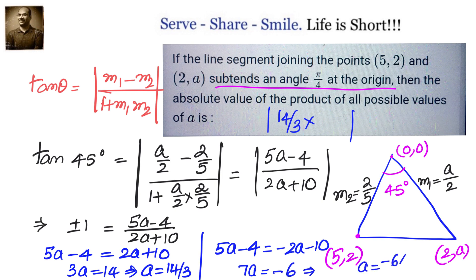The product of all possible values, absolute value we want. So we multiply 14/3 into minus 6/7. Absolute value when we take we get 4, because 7 will go 2 times, 3 will go 2 times. Two 2's are 4, minus 4 absolute value is 4.